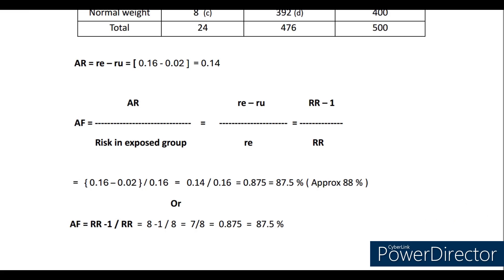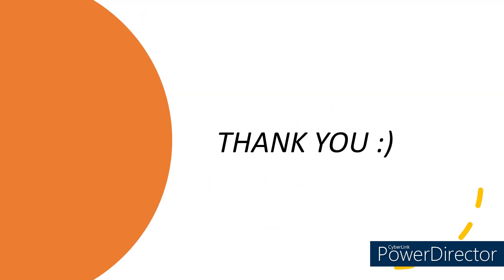One tip: always be thorough with the basics — what is case control, what is cohort, and what is the measure of association used in a particular study. Then understand the terms exposure and outcome. Once you know those, you can easily construct the table by first extracting values given directly in the question, then finding the missing values. After constructing the table, always cross-check horizontal and vertical totals. Then recollect the formulas and substitute the values. I hope this is helpful. Thank you.